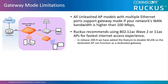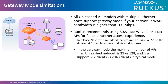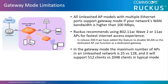Starting in release 200.9, we have added a feature to disable wireless LAN so the dedicated AP can function as a dedicated gateway controller, leaving the other Unleashed APs in the network to handle the WLAN clients and traffic. In the gateway mode, the maximum number of APs in an Unleashed network is 25 versus 128 in the typical mode, and it will support 512 clients versus 2048 clients in the typical mode. There is also no VLAN or Bonjour gateway support.